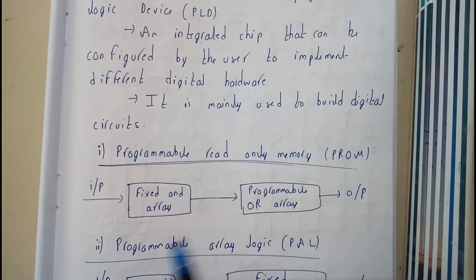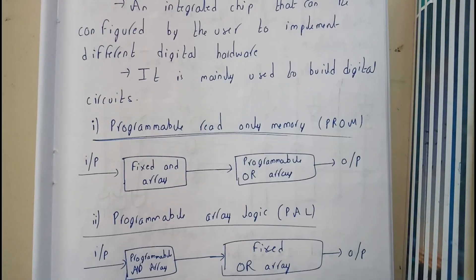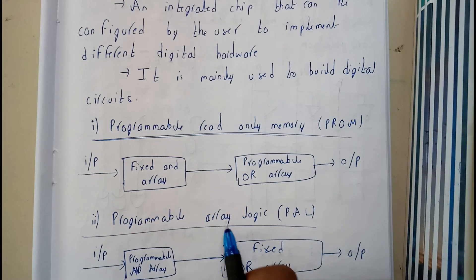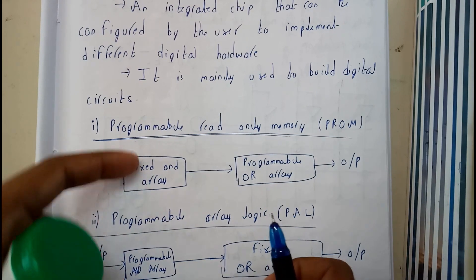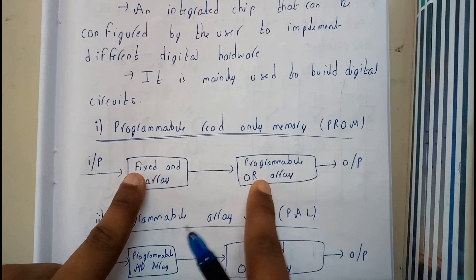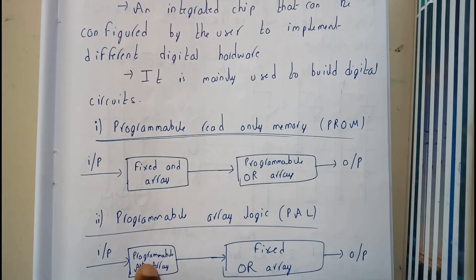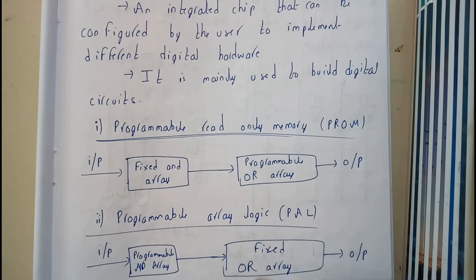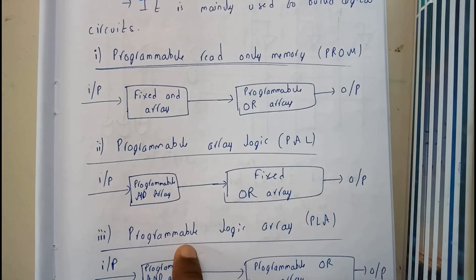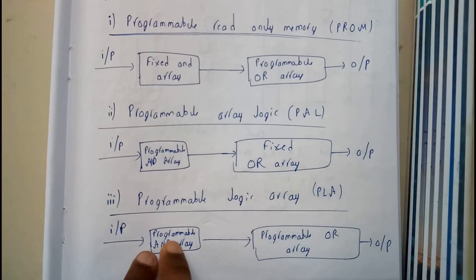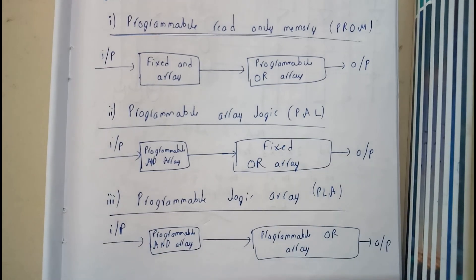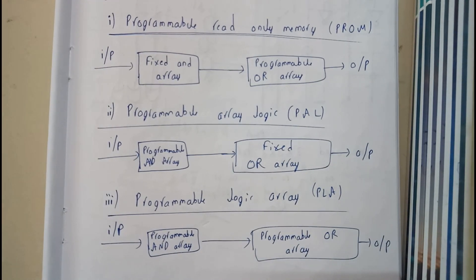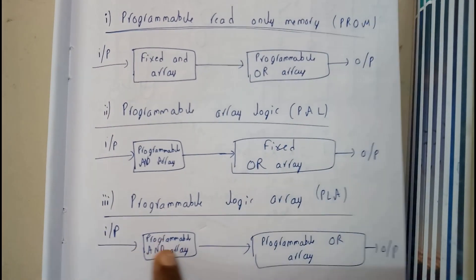The second type is Programmable Array Logic, or PAL. Here we have a programmable AND array and a fixed OR array. So in PROM we had fixed AND with programmable OR; in PAL we have programmable AND with fixed OR. In Programmable Logic Array, or PLA, we have both a programmable AND array and a programmable OR array. So now I hope everyone is 100% familiar with these concepts.